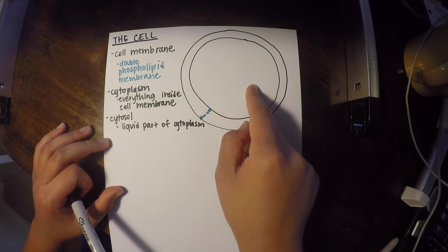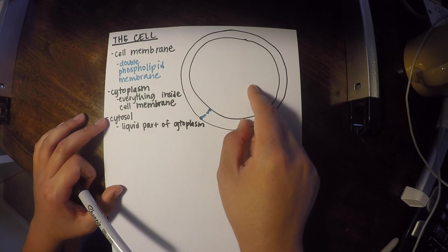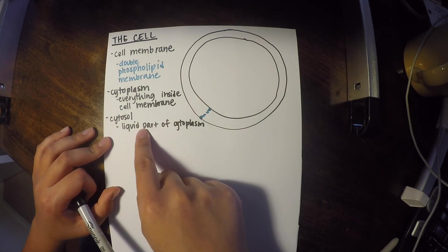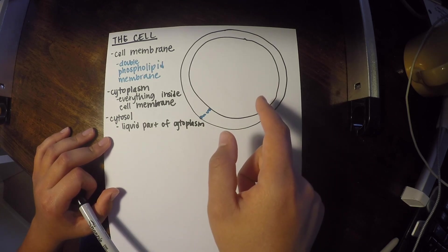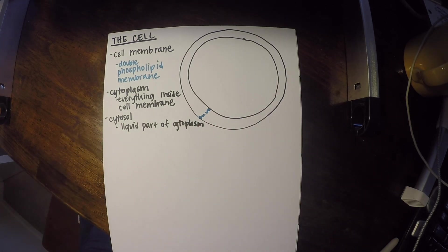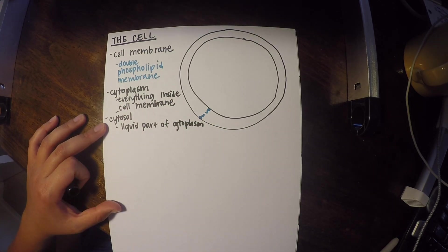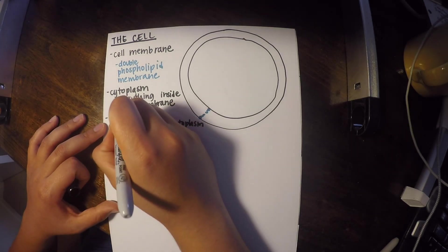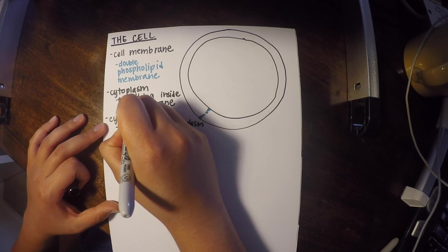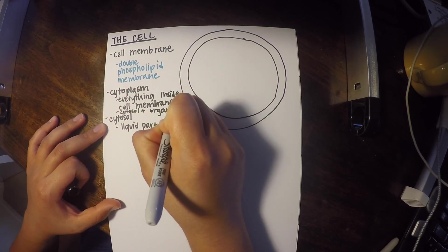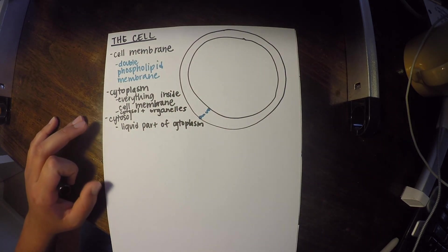So the cytoplasm is essentially the area of space outside of the nucleus and it consists of both the cytosol and the other organelles. And we're going to learn about the organelles in a moment. It's a little squished towards the bottom, but the cytoplasm consists of cytosol and organelles.